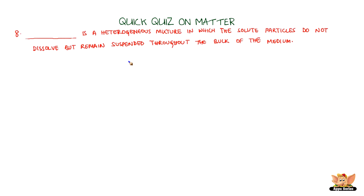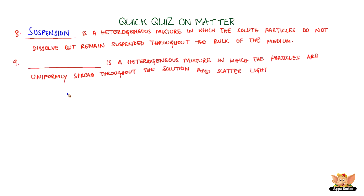A suspension is a heterogeneous mixture in which the solute particles do not dissolve but remain suspended throughout the bulk of the medium. A colloidal solution is a heterogeneous mixture in which the particles are uniformly spread throughout the solution and scatter light.